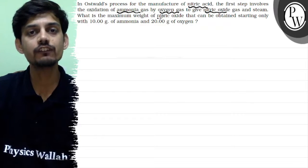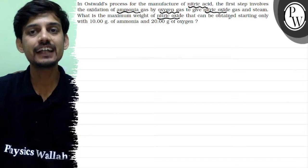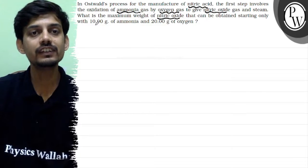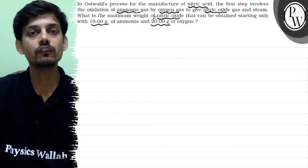What is the maximum weight of nitric oxide that can be obtained starting only with 10 grams of ammonia and 20 grams of oxygen?